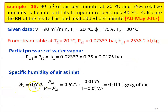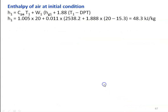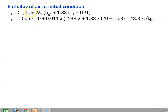From the steam table at 20 degree Celsius, the saturation pressure PS1 equal to 0.02337 bar and enthalpy of vapor HG1 equal to 2538.2 kilojoules per kilogram. The partial pressure of water vapor: PW1 equal to PS1 × φ1, which is 0.02337 × 0.75 equal to 0.0175 bar. The specific humidity at inlet: W1 equal to 0.622 × 0.0175 divided by (1 minus 0.0175) equal to 0.011 kg per kg of air. The dew point temperature corresponding to PW1 equal to 0.0175 bar is 15.3 degree Celsius from steam tables. Enthalpy H1 equal to Cpa×T1 plus W1×(HG1 plus 1.88×(T1 minus DPT)) equal to 1.005×20 plus 0.011×(2538.2 plus 1.88×(20 minus 15.3)) equal to 48.3 kilojoules per kilogram.